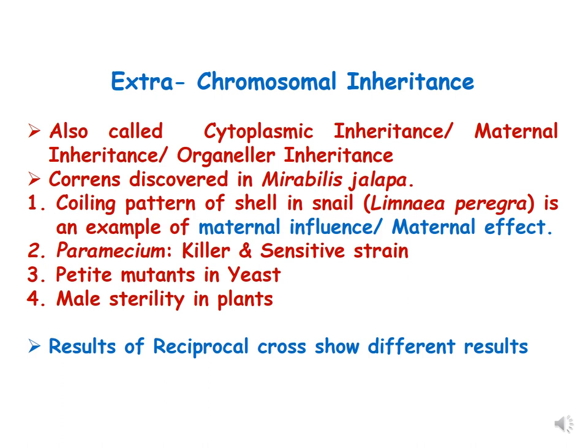Extra-chromosomal inheritance was first discovered by Correns in Mirabilis jalapa. Examples include shell coiling in snails, which is an example of maternal influence or maternal effect; killer and sensitive strains of Paramecium; male sterility in plants; and petite mutants in yeast. Results of reciprocal crosses show different results because it is an extension of Mendelian inheritance — it does not follow the laws of Mendelian inheritance.